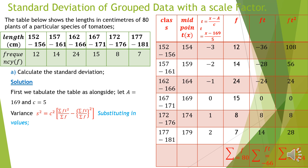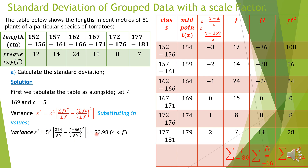Substituting the values from the table: C = 5, so we write 5²; ΣFT² = 224; ΣF = 80; ΣFT = −66; and ΣF = 80. After substituting and simplifying using a calculator, we get the variance as 52.98 to 4 significant figures.